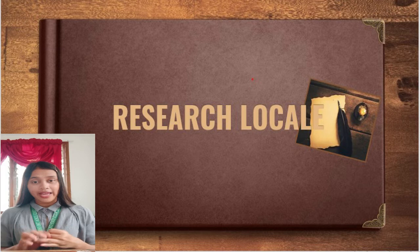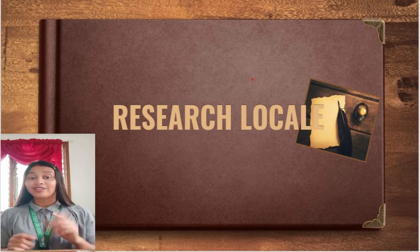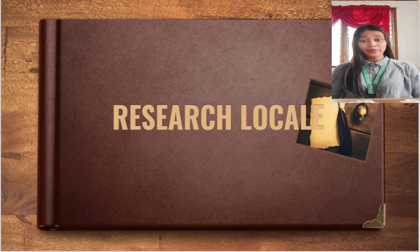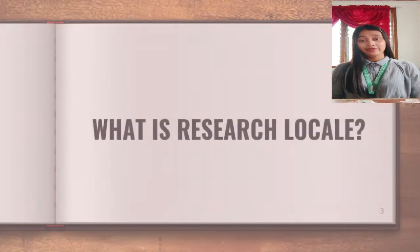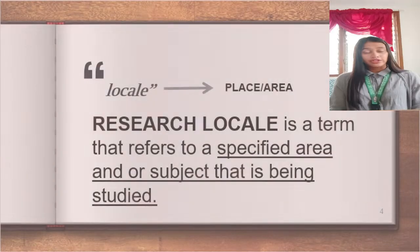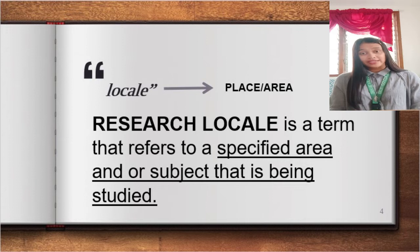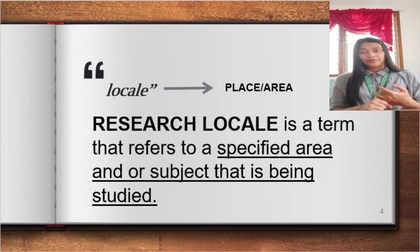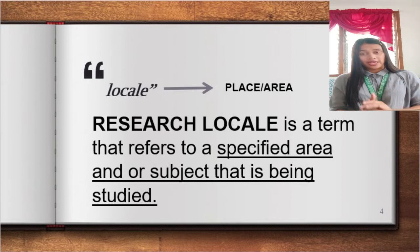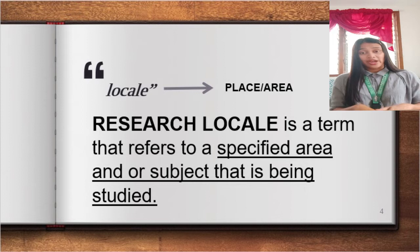Before we go further, let us define first what research locale is. Research locale — from the word itself, 'local' — it is referred to the place where something happens. So in research, research locale is a term that refers to the specified area and/or subject that is being studied. In other words, it is where the study is to be conducted.